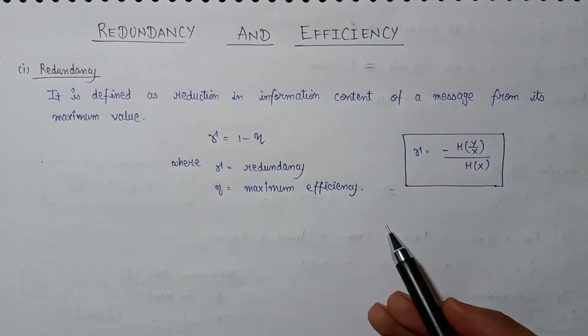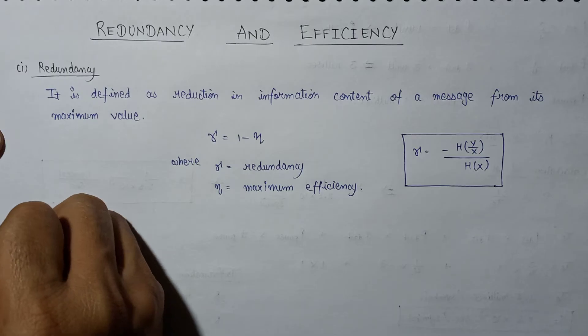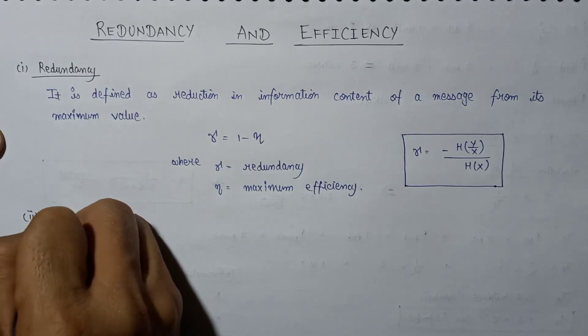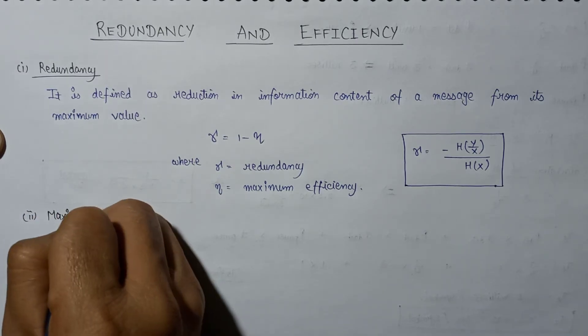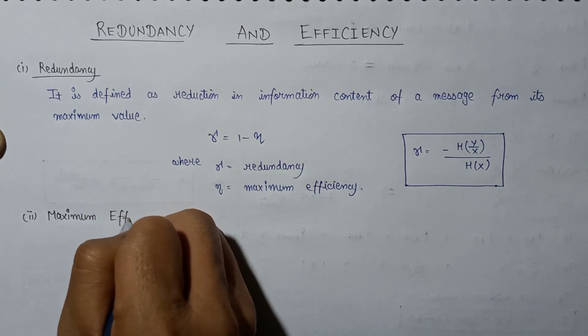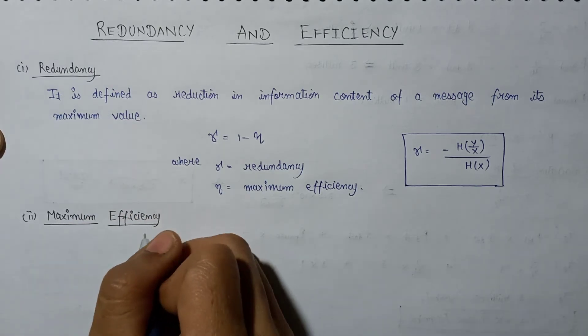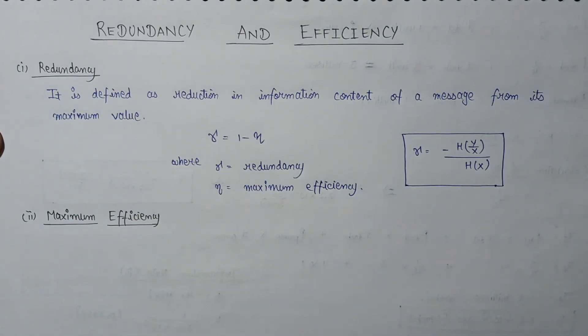So this is all about redundancy. Let's talk about maximum efficiency. Maximum efficiency is defined as a ratio of entropy to the average length per unit code.